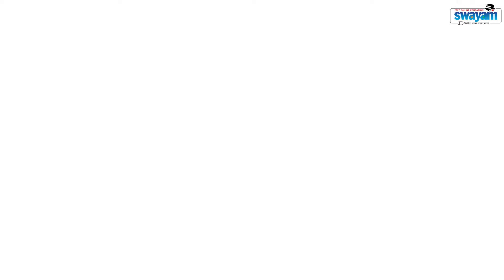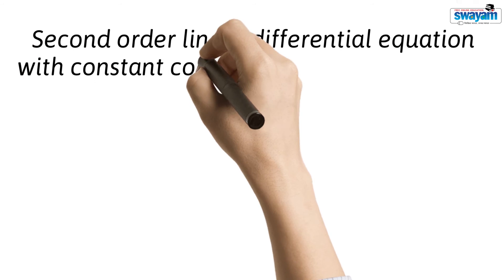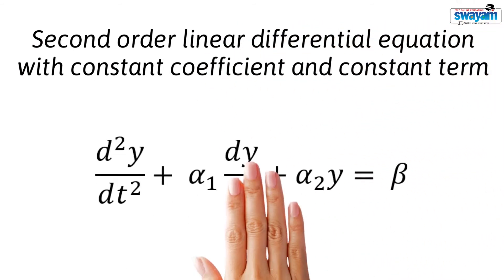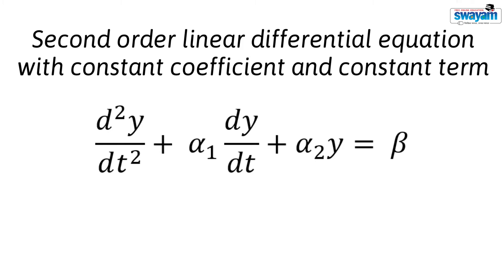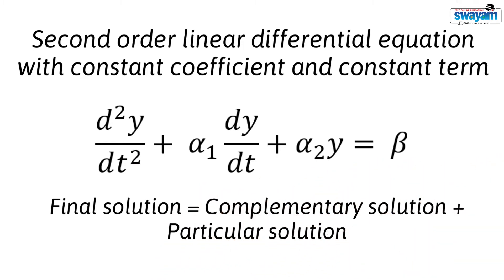The general form of a second-order linear differential equation with constant coefficient and constant term is represented like this. Alpha and beta are constants. Just like a first-order differential equation, the solution of a second-order differential equation also consists of two parts: complementary solution and particular solution. The final solution, or the general solution, is the sum of the complementary solution and particular solution.